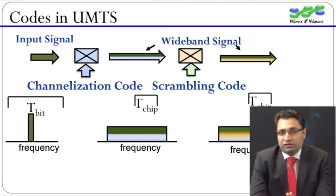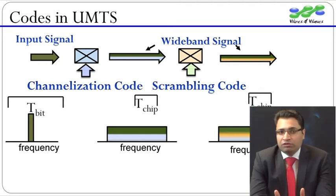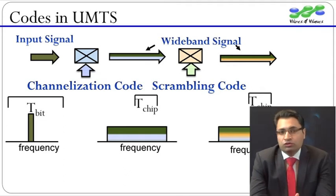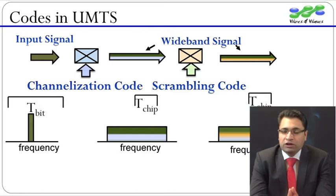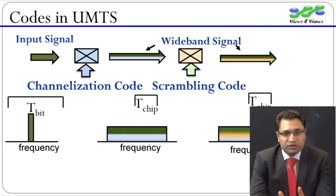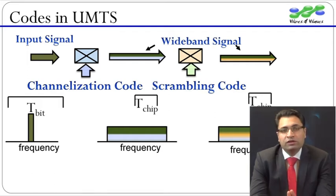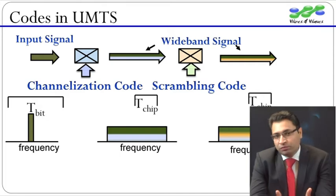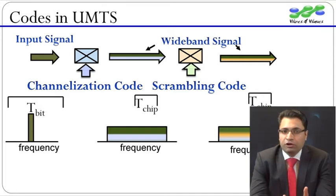In any code division multiple access system, codes are very important. Let's take a look at the codes used in UMTS. There are two types of codes: channelization codes and scrambling codes. Channelization codes perform the bandwidth spreading by multiplying a user's slow input signal with a very fast code signal. The input signal can be 12 kilobits per second, 64 kilobits per second, or any arbitrary number depending on service. But the channelization code is always 3.84 million chips per second, where chip is another name for a bit of the code signal.